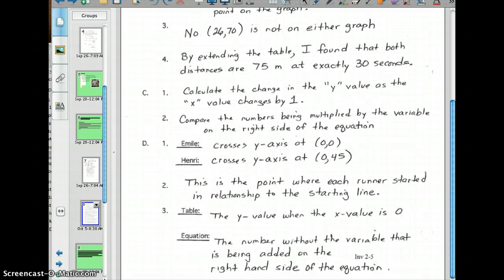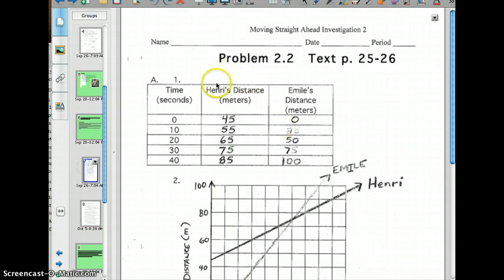Now, question two says, what information do these points represent in terms of the race? This is the point where they started in relation to that starting line, at 0 seconds. Where are they going to be? That's how we can see that. So how can these points be found in the table and the equation? Well, if you look at the table, it's where the y value is 0. So we can see their starting points right here at 45 and 0. Notice (0,45), (0,0). That's how we can see it in the table.